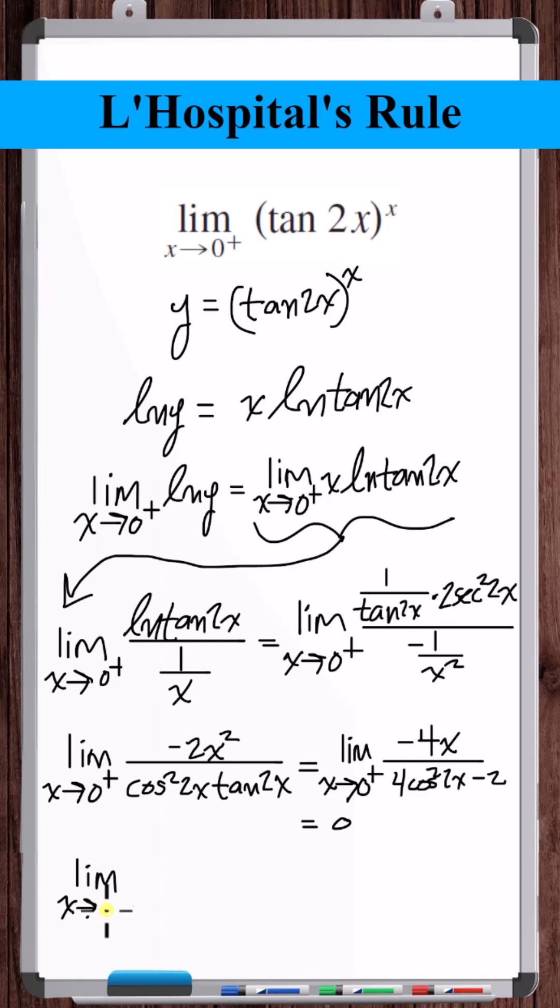So we have the limit as x approaches 0 from the right of natural log of y is equal to 0. Raising both sides to the power e, we get the original limit is equal to 1. So this limit is equal to 1.